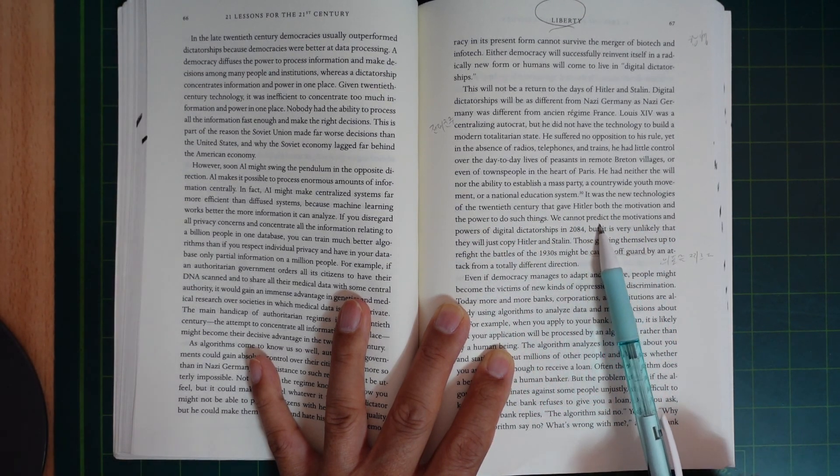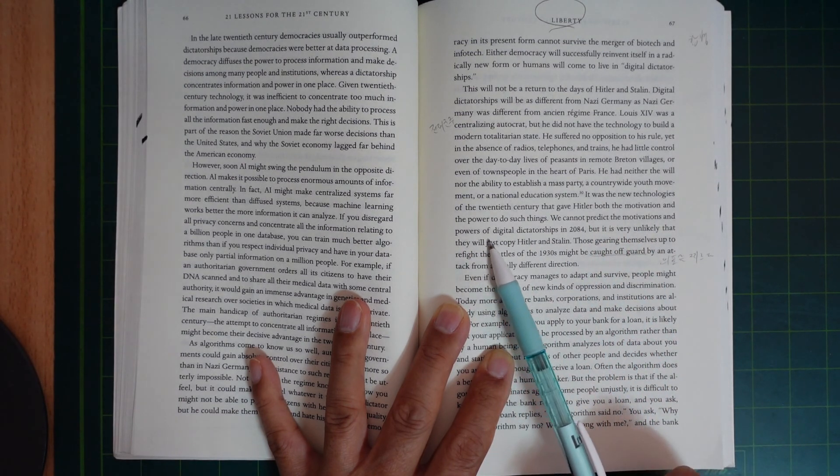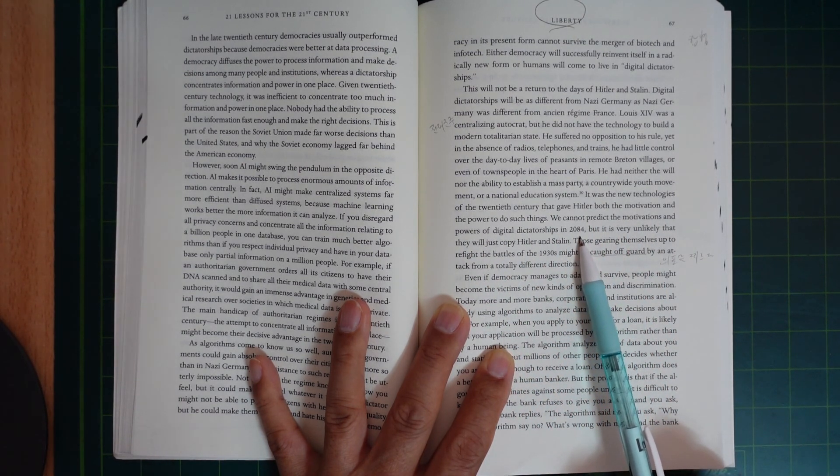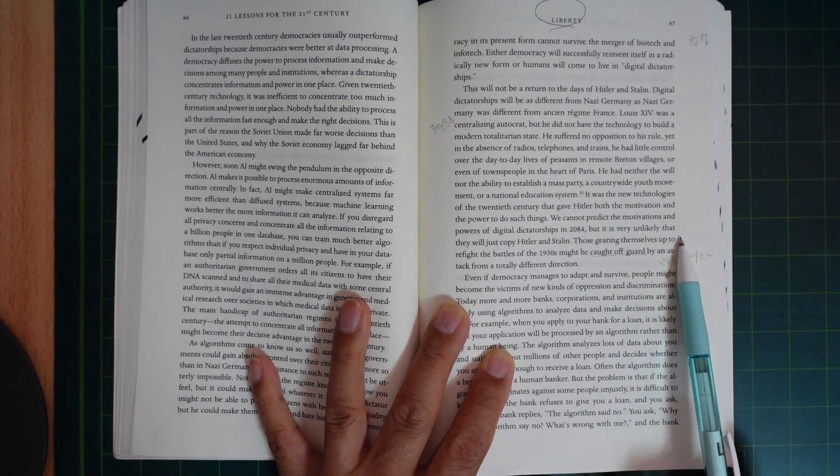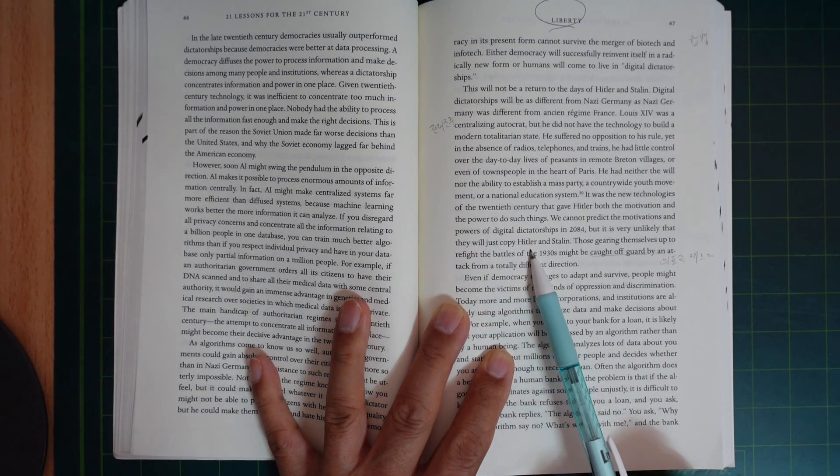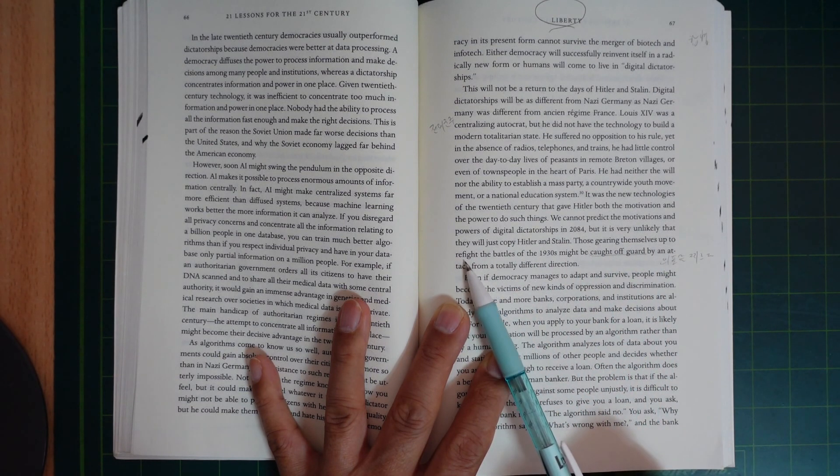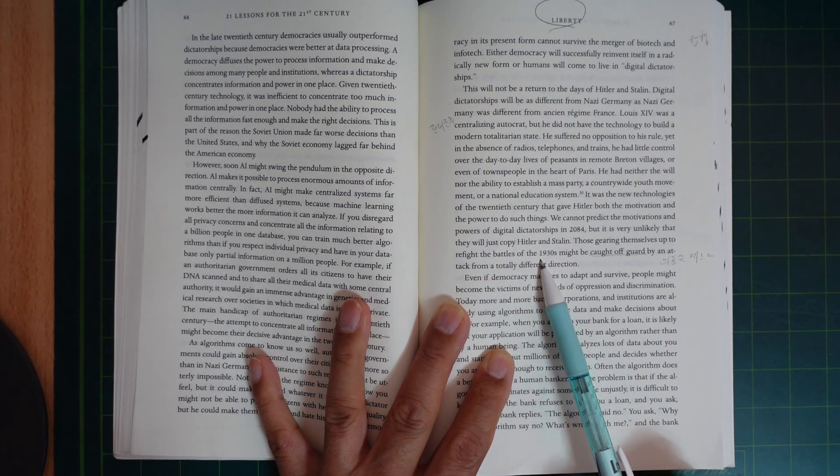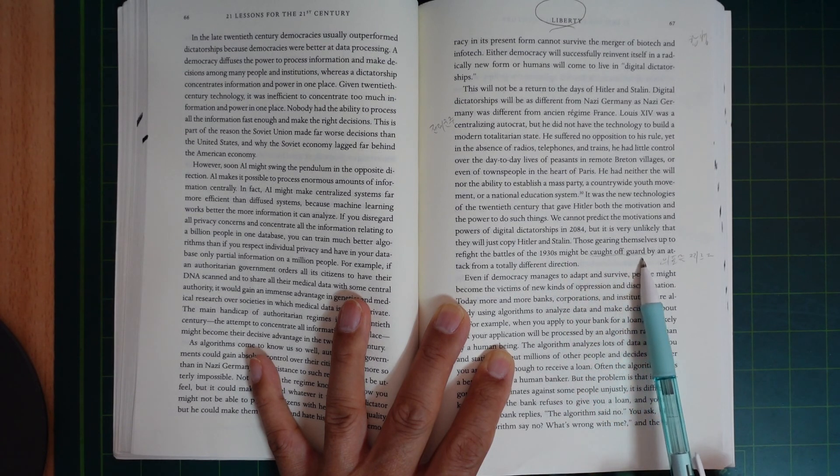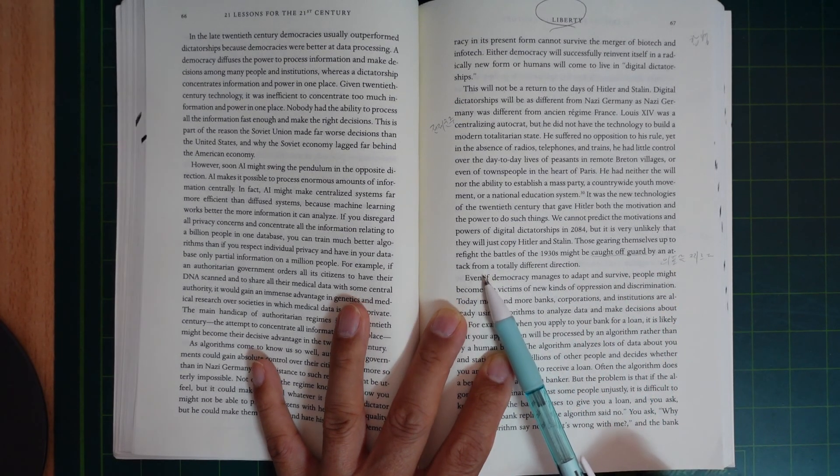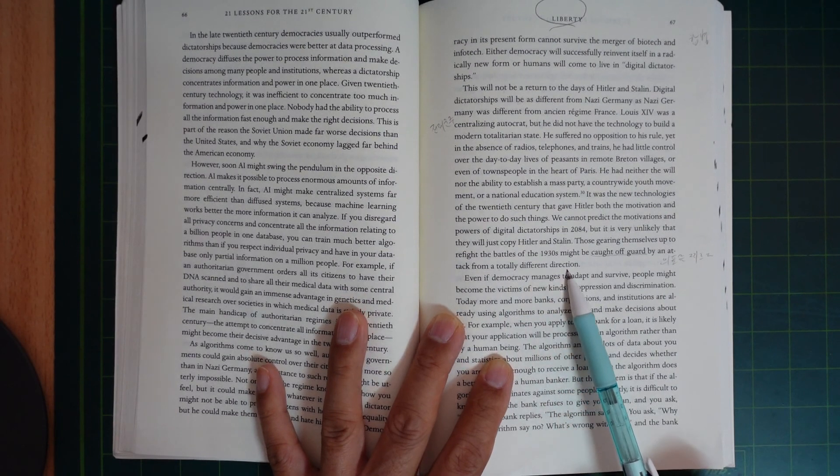We cannot now predict the motivations and powers of digital dictatorships in 2084, but it's very unlikely that they will just copy Hitler and Stalin. Those gearing themselves up to refight the battles of the 1930s might be caught off guard by an attack from a totally different direction.